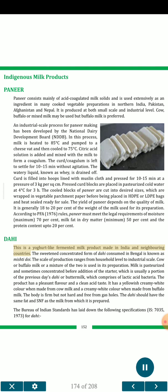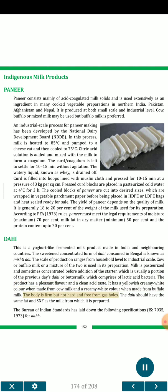Dahi: this is a yogurt-like fermented milk product made in India and neighboring countries. The sweetened concentrated form of dahi consumed in Bengal is known as mishti doi. The scale of production ranges from household level to industrial scale. Cow or buffalo milk or a mixture of the two is used in its preparation. Milk is pasteurized and sometimes concentrated before addition of the starter, which is usually a portion of the previous day's dahi or buttermilk, comprising lactic acid bacteria. The product has a pleasant flavor and a clean acid taste, with a yellowish creamy white color when made from cow milk and a creamy white color when made from buffalo milk. The body is firm but not hard and free from gas holes. The dahi should have the same fat and SNF as the milk from which it is prepared. The Bureau of Indian Standards has laid down specifications (IS 7035, 1973) for dahi.